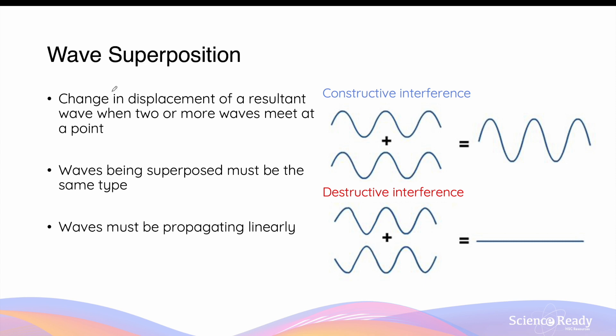Wave superposition occurs when there's a change in the displacement of a resultant wave when two or more waves meet at a certain point at a given time. When you have multiple sources of waves coming together at a single point and combined, it will produce a single resultant wave whose displacement will depend on the relative position and amplitude of the multiple waves that combine together. This process of combining waves together is known as wave superposition.